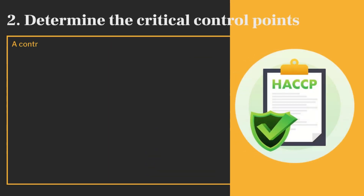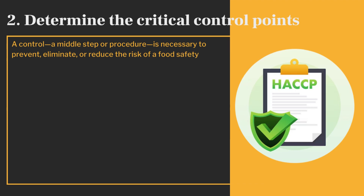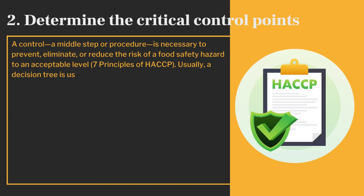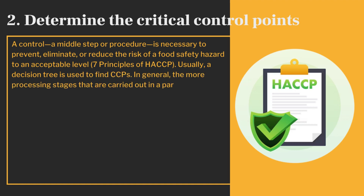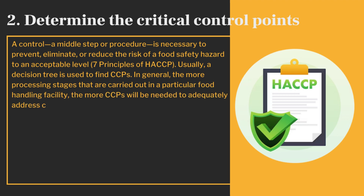A control — a middle step or procedure — is necessary to prevent, eliminate, or reduce the risk of a food safety hazard to an acceptable level. Usually, a decision tree is used to find CCPs. In general, the more processing stages that are carried out in a particular food handling facility, the more CCPs will be needed to adequately address contamination risks.